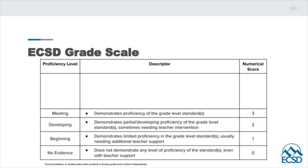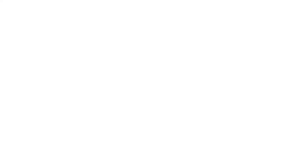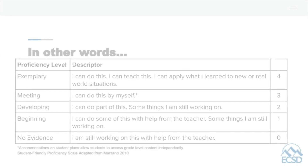A student who demonstrates proficiency of the grade level standard earns a 3. Finally, a 4 is earned when students can demonstrate proficiency of the grade level standard, as well as providing evidence of higher level thinking skills, or are able to transfer and apply concepts and skills to different situations or contexts.